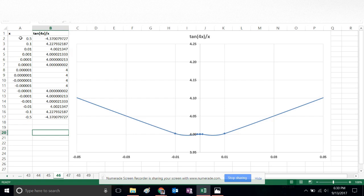As we see, approaching x equals 0 from the right, getting x values closer and closer to 0, we see that the function approaches 4 closer and closer.